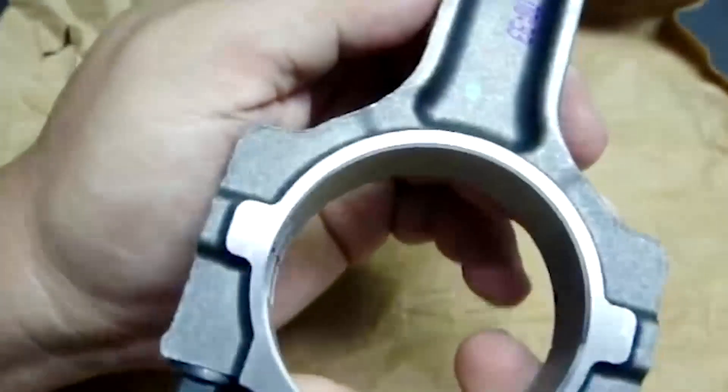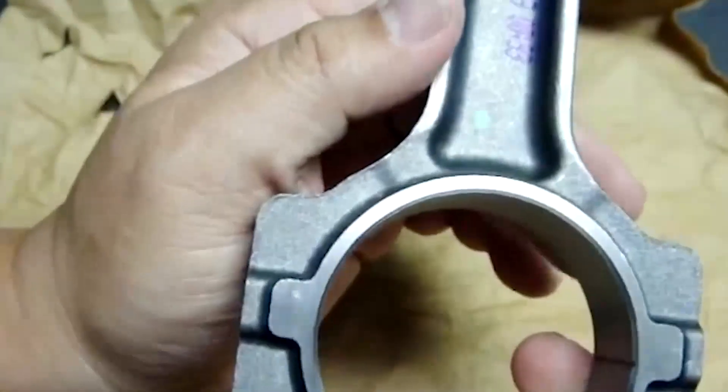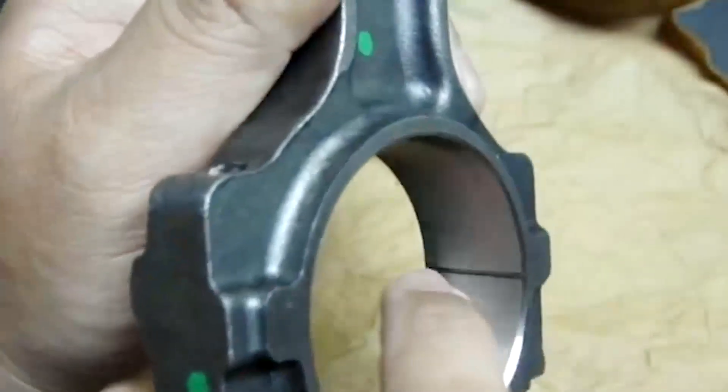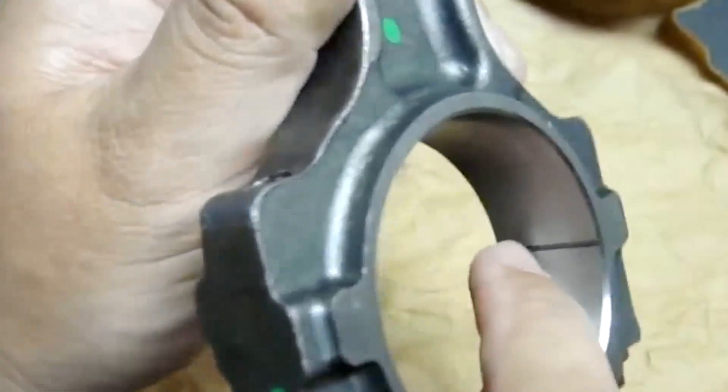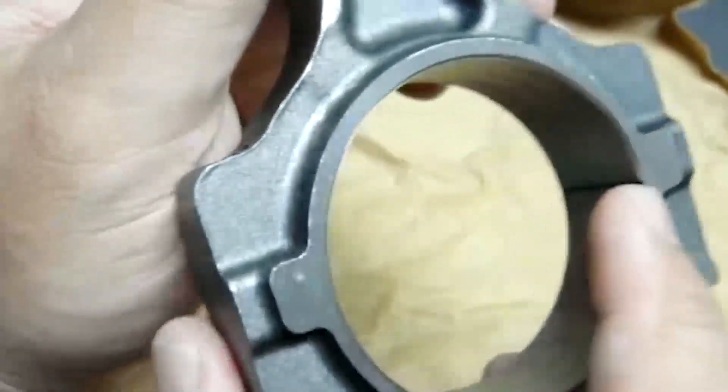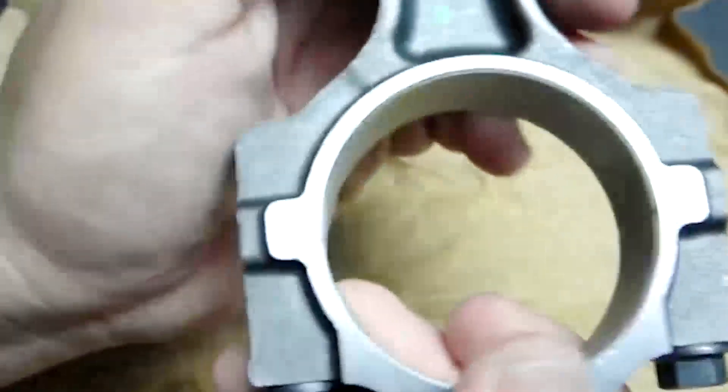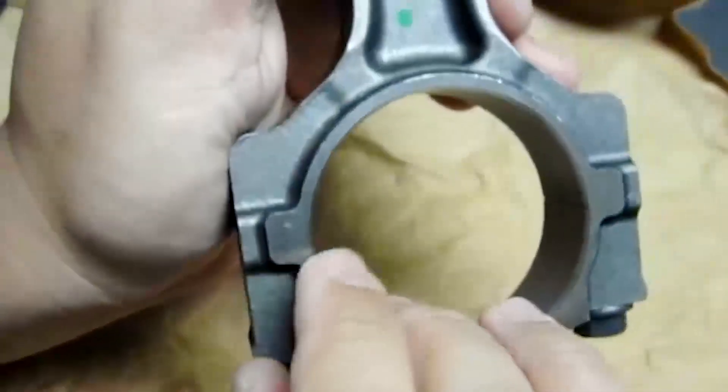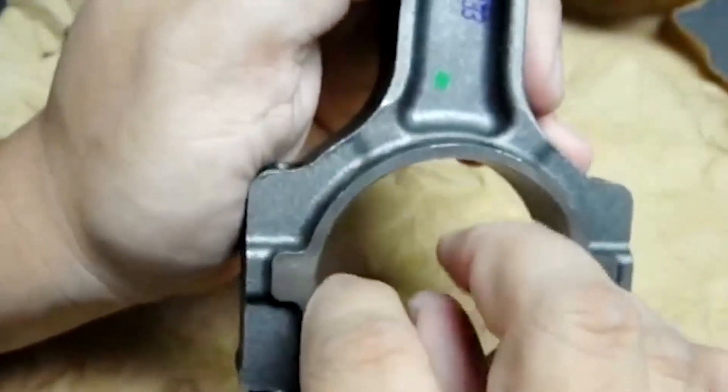This connecting rod has not seen installation into an engine. As you can tell, the end cap has not been cracked off. You can see that there is a cracking machining line machined into the inside of the journal over here, at which time a special tool is used to pull the connecting rod bottom end in half.